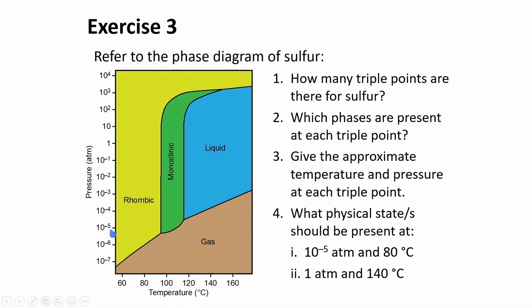10 to the minus 5 atmospheres and 80 degrees Celsius is about here. As you will see at this region, the rhombic phase is present. How about at 1 atmosphere and 140 degrees Celsius? 1 atmosphere, 140 degrees Celsius. Liquid sulfur is present at that condition.